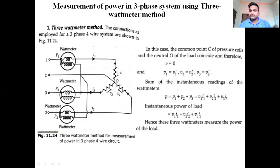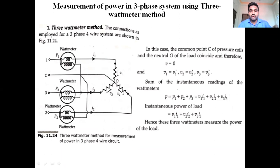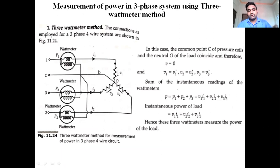This is a three-phase four-wire system with a star connected load. Wattmeter 2 is connected to line 2 and wattmeter 3 is connected to line 3. There is also a fourth wire — the ground or neutral wire. The current coil of wattmeter 1 is connected in series to the line.